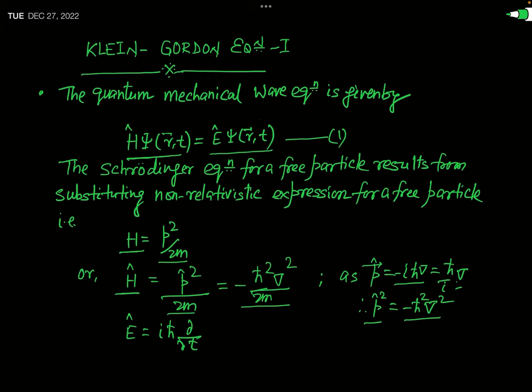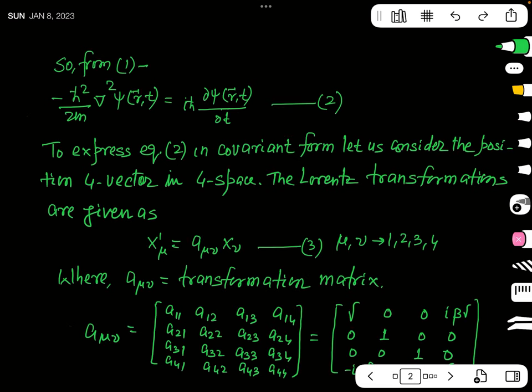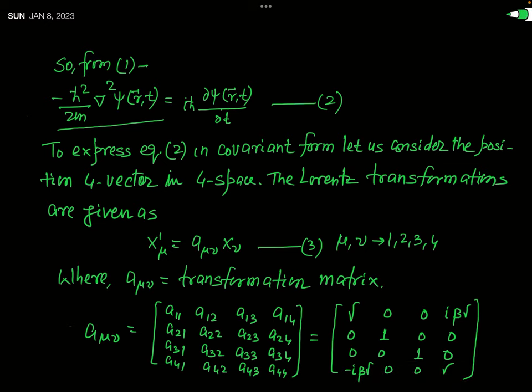The non-relativistic Hamiltonian operator H-hat is defined as minus h-bar squared del-squared over 2m, where del-squared is the Laplacian. The energy operator E-hat is defined as i h-bar del/del-t. Substituting these two operators into the quantum mechanical wave equation gives Schrödinger's time-dependent equation: minus h-bar squared over 2m del-squared ψ(r,t) equals i h-bar del ψ(r,t)/del-t.